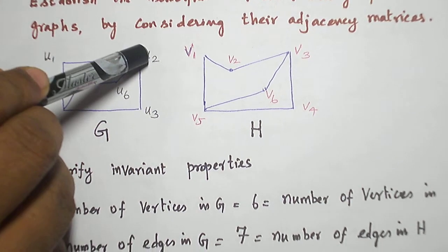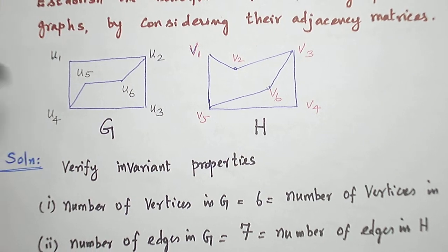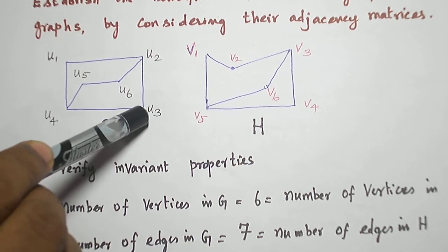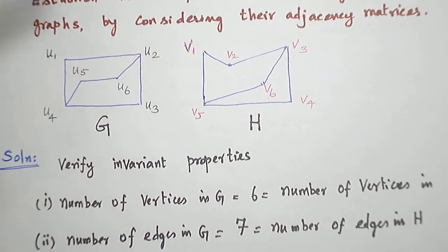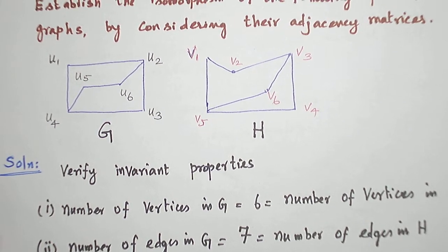U1 is adjacent to U2, degree-3 vertex, and U4, degree-3 vertex. Similarly, U3 is adjacent to U4, degree-3 vertex, and U2, degree-3 vertex. Likewise,